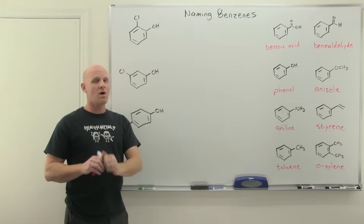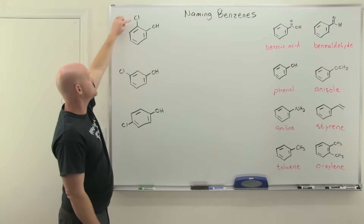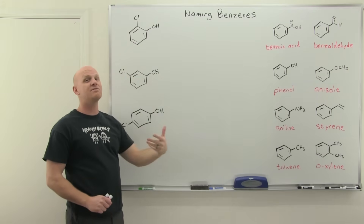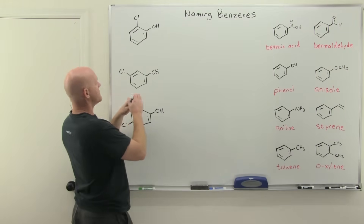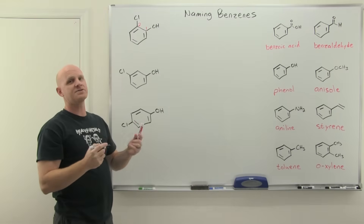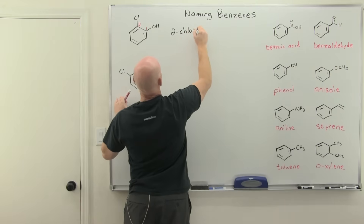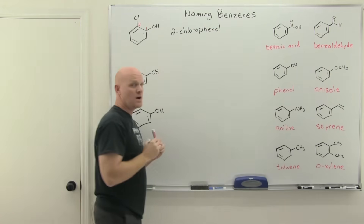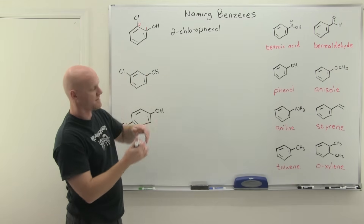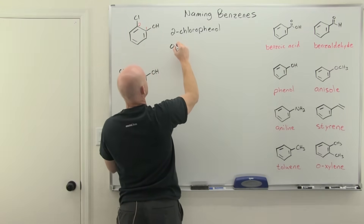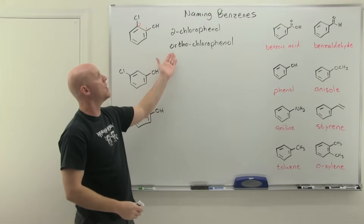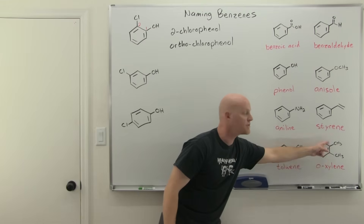Instead of using the numbering system — which you can still use — we also have another option for di-substituted benzenes with special names. There's no special name for chlorine alone, but there is for the OH group. Most commonly you'd name this as a phenol rather than hydroxybenzene. Calling it phenol makes this carbon number one automatically, and to get the lowest possible number, the chlorine is at carbon number two. So we could call this 2-chlorophenol. But for the 1-2 relationship, we also call that ortho — so you could also call it ortho-chlorophenol, or simply o-chlorophenol, just as o-xylene uses this shorthand for the 1-2 relationship.